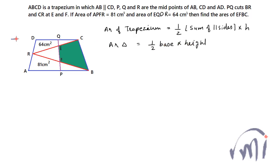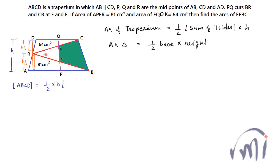If I assume the height of this trapezium as H, and since R is a midpoint of AD, if I draw a perpendicular from the extended CD through R, both resulting triangles will be congruent. Therefore, both perpendicular lengths will be equal to H divided by 2.